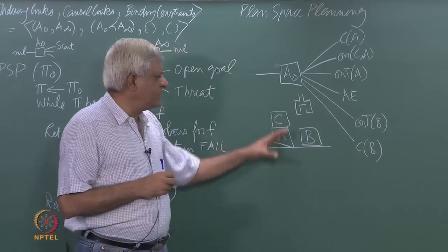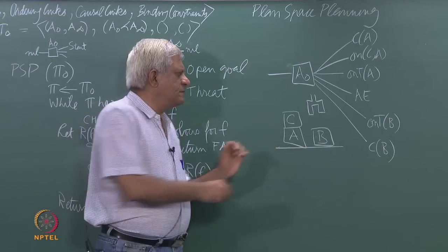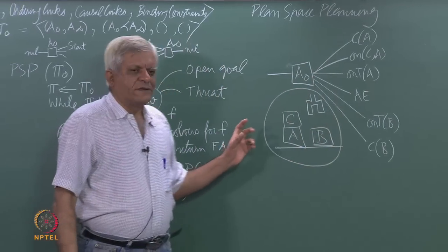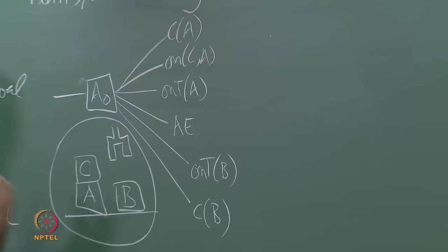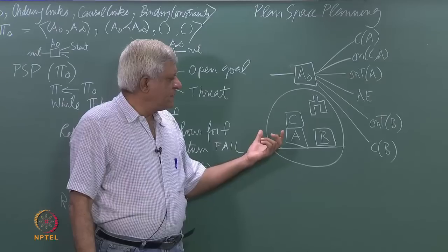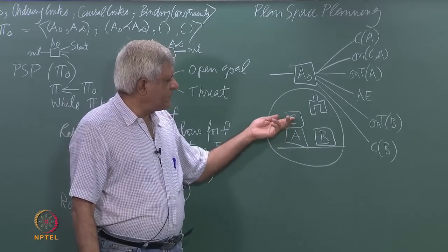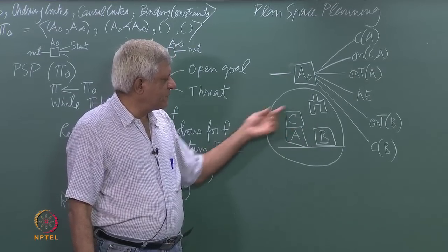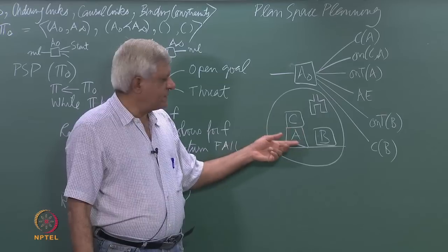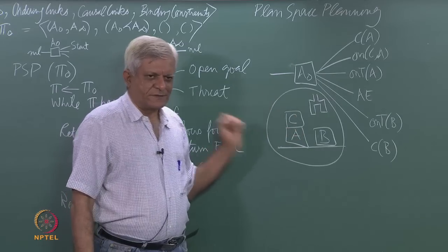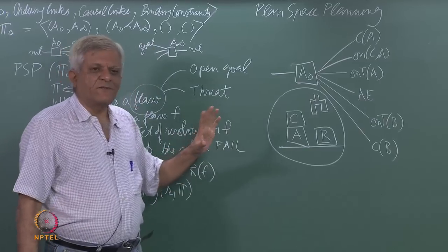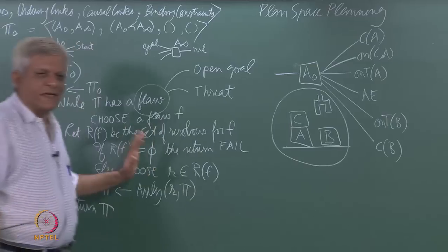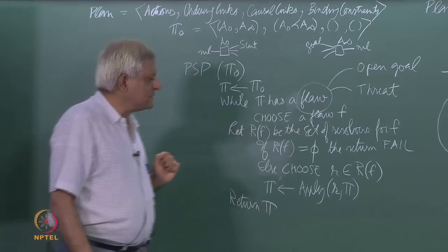If you work out the solution for this problem, the optimal solution is a six-step solution: first unstack C from A and put it on the table, then put B onto C, then put A onto B. Goal stack planning would never find this six-step plan, but plan space planning can find it.